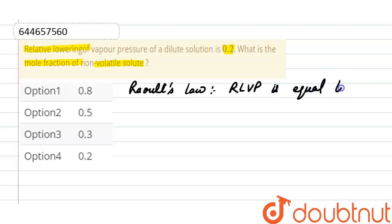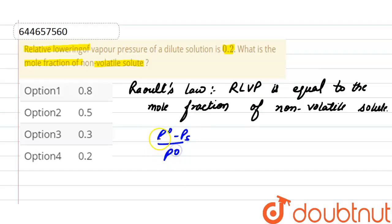Now according to Raoult's law, the statement is: relative lowering of vapor pressure, that is, pressure in pure state minus vapor pressure in solution, divided by vapor pressure in pure state, is equal to mole fraction of non-volatile solute.